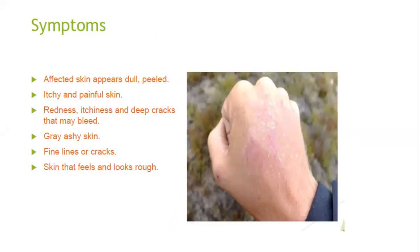What kinds of symptoms indicate that the skin is dry? The affected skin appears dull, and a peeled effect is there on the skin. Itchy and painful skin may be there depending on the proportion of dryness. Redness, itchiness, and deep cracks may be possible. Sometimes bleeding may be there. Gray or ashy color may appear on the skin, as well as fine lines and cracks. The skin can feel and look rough.